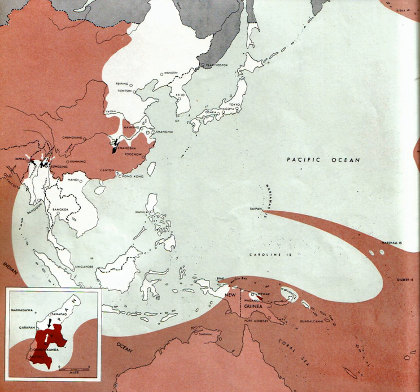On the 9th, the Moscow Conference begins. Churchill and Stalin discuss spheres of influence in the post-war Balkans.